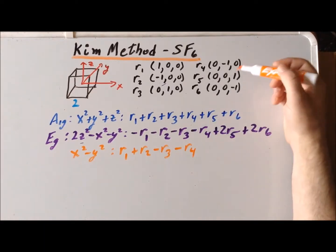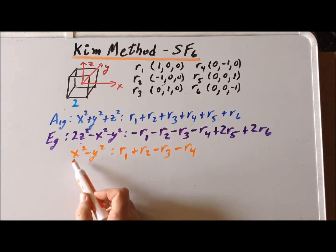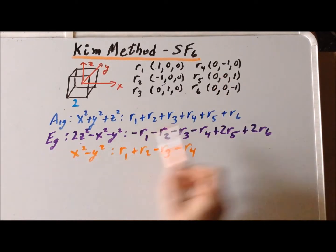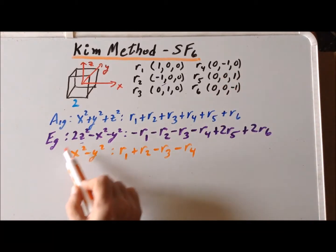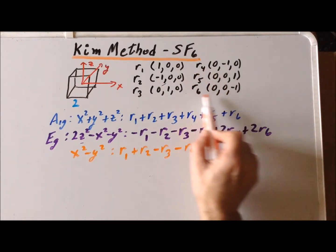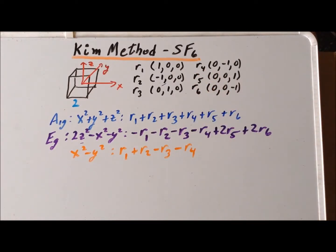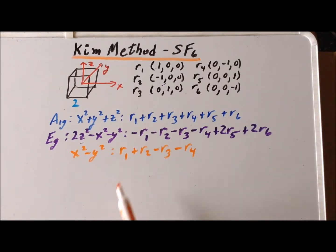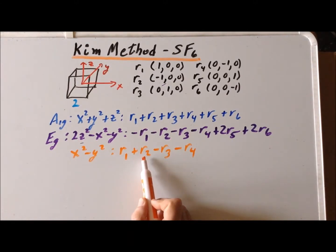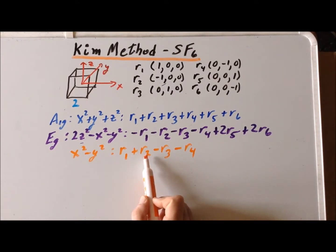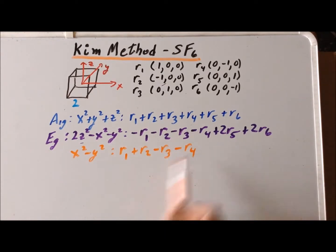For points R5 and R6, their x and y-coordinates are each equal to 0. Although they have a non-zero z-coordinate, z is not involved in the basis function x²-y². So evaluating at R5 and R6 gives coefficients of 0. Overall, this vibration is R1+R2-R3-R4, meaning R1 and R2 get bigger while R3 and R4 get smaller during the vibration.